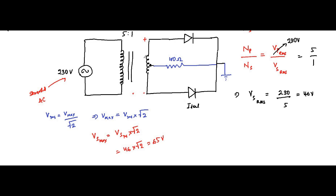The voltage VS(max) is equal to 65 volts from one end to the other end of the secondary winding. The center tap point divides this 65 volt secondary winding voltage equally. So this becomes 65 divided by 2, that is 32.5 volts from the center tap to one end, and again 32.5 volts from center tap to the other end. This is the maximum value of the voltage which appears across the diode during any given cycle.